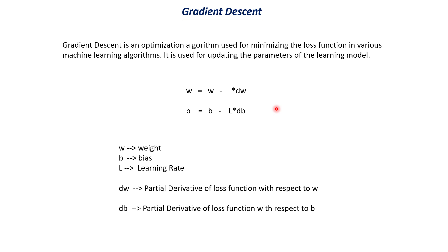This is the formula for calculating gradients and updating the weights. Gradient descent is an optimization algorithm used for minimizing the loss function, and it is used for updating the parameters of the learning model. The formula to update weights is: w = w minus learning_rate times dw, and similarly for bias: b = b minus learning_rate times db. Here dw is the partial derivative of the loss function with respect to w, and db is the partial derivative of the loss function with respect to b.